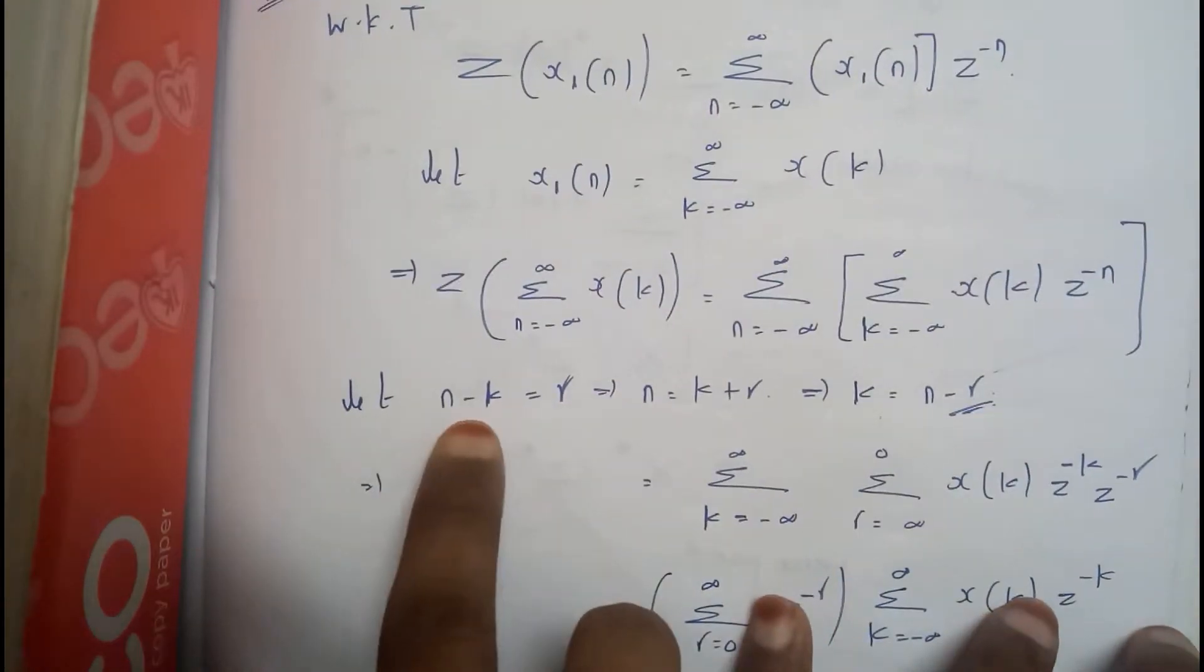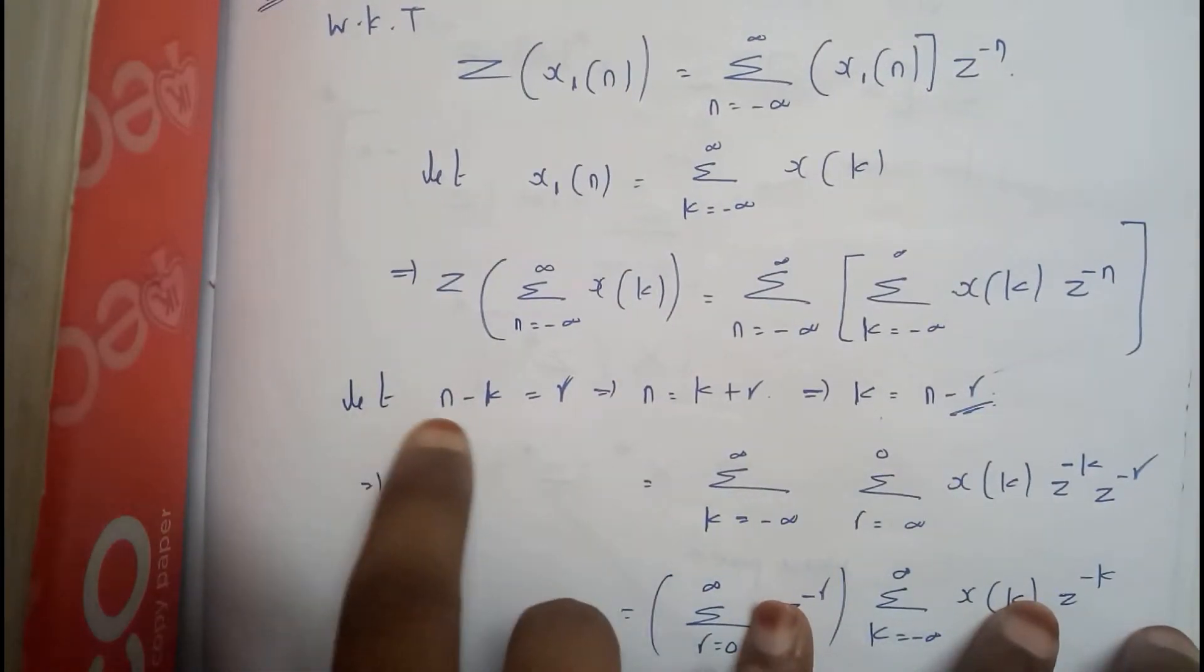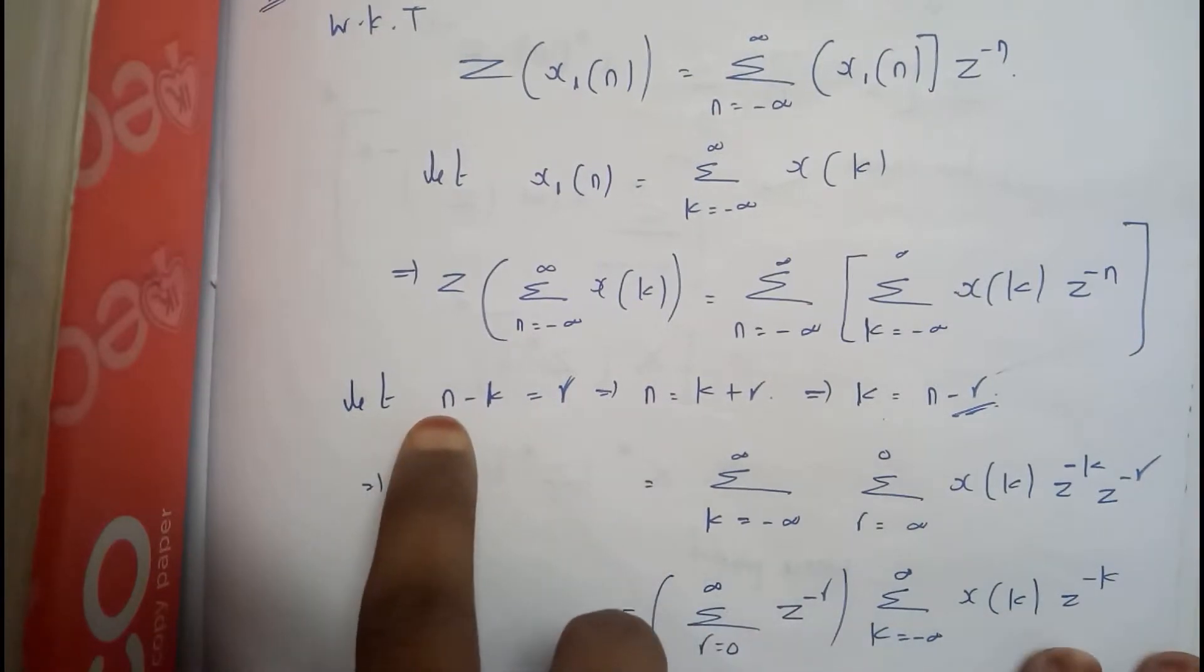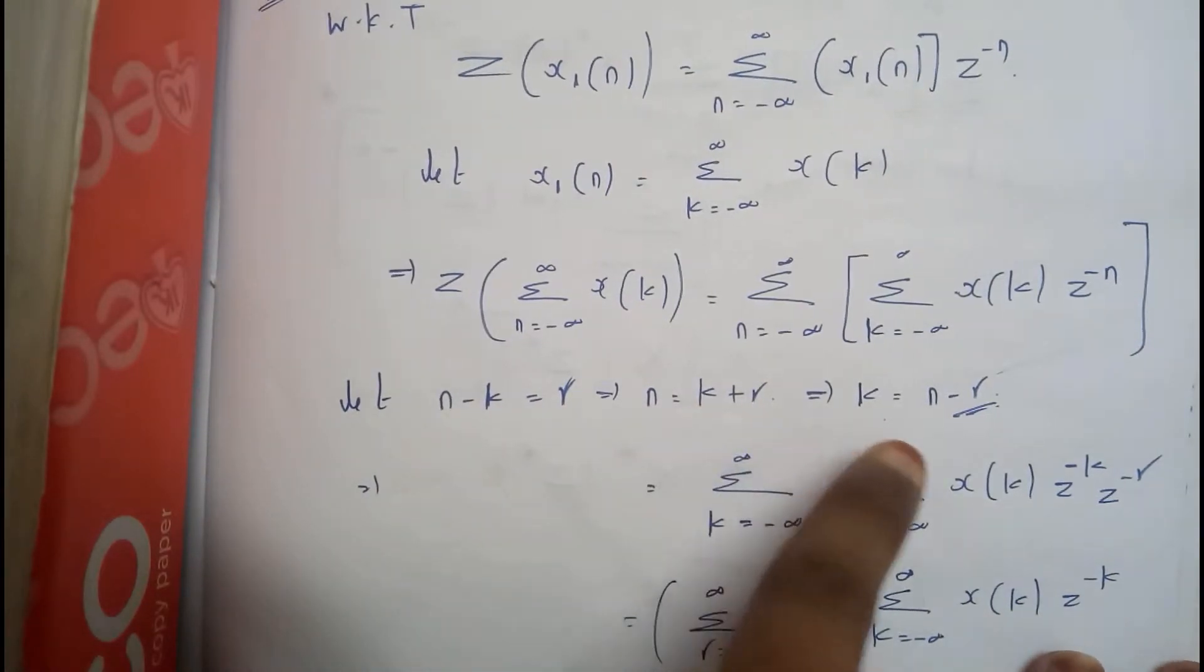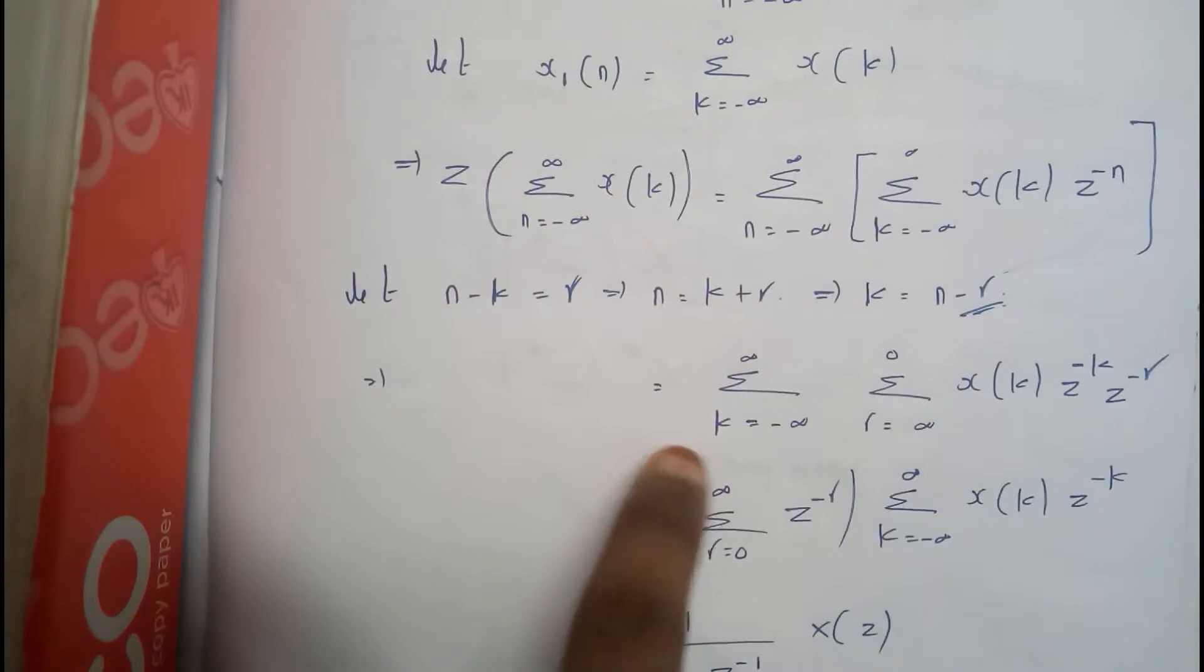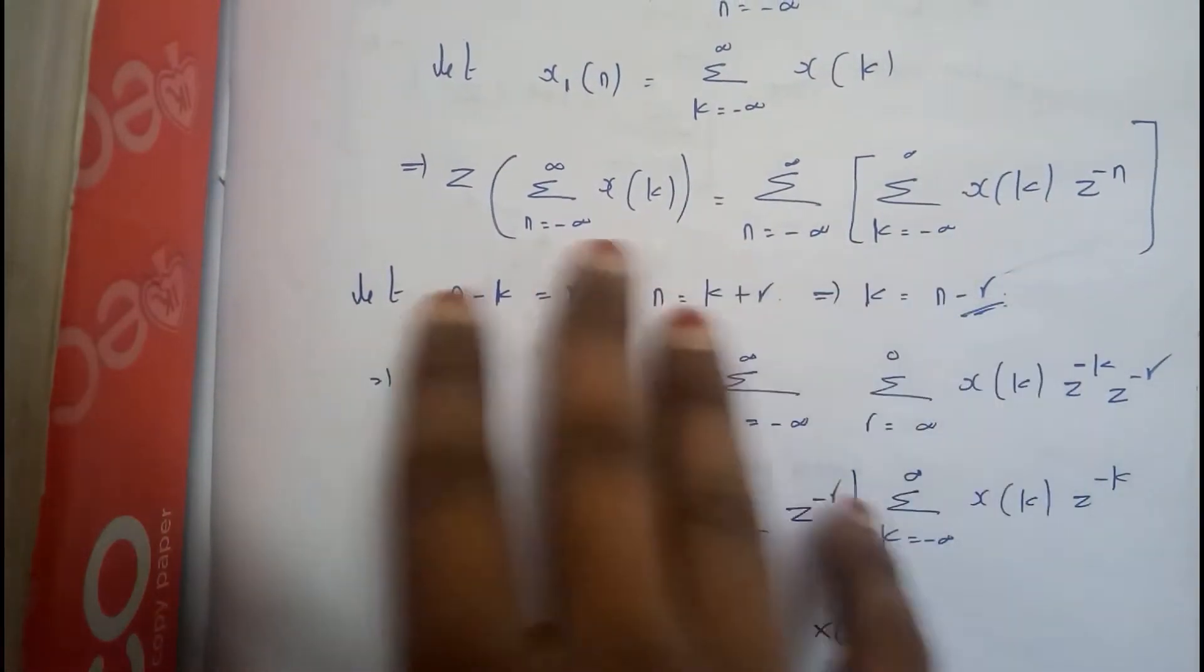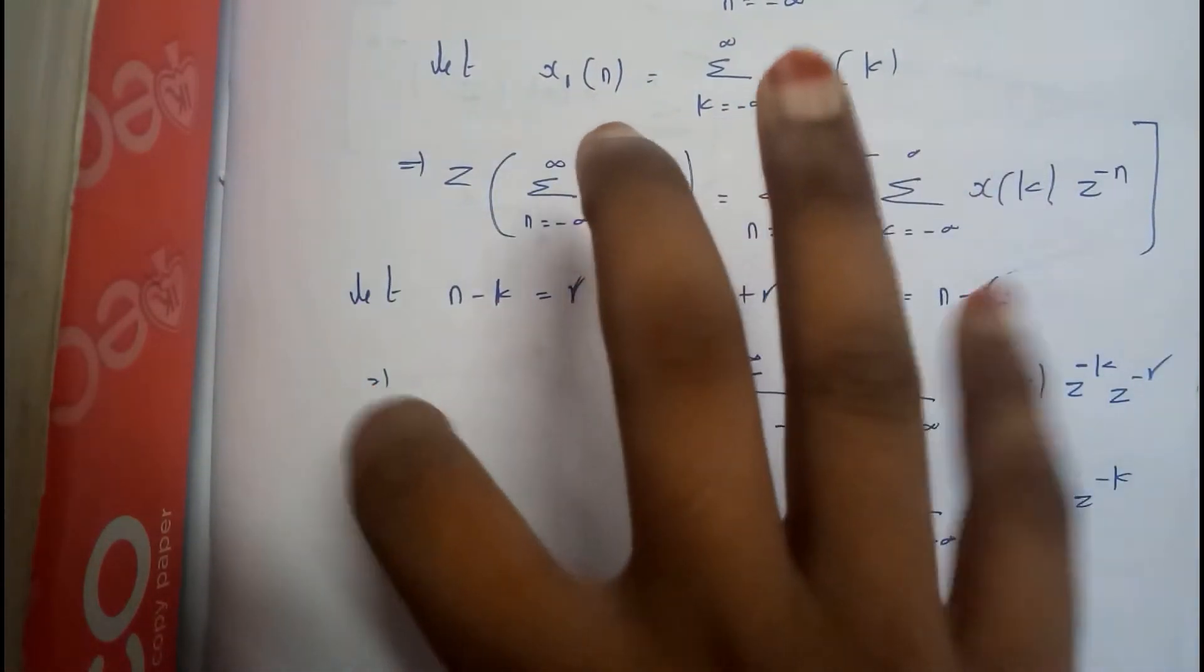Here we will be assuming that n minus k equals r. So we will be finding n. What is n? n equals k plus r. And what is k? k is nothing but n minus r. So we will be substituting all these values to make the equations a bit simpler.